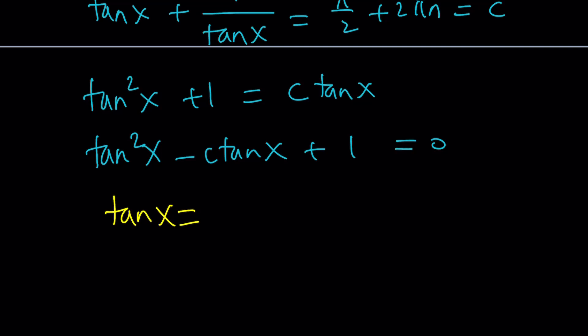Hopefully you see what I see. Tangent squared x minus c tangent x plus 1 equals 0. And now we're going to use the quadratic formula. Tangent x equals negative b, which is c, plus minus the square root of b squared minus 4. Awesome. The only requirement we have is c must be greater than or equal to 2 or less than or equal to negative 2. But what is c? Great, good question.